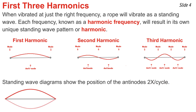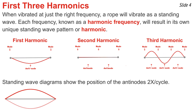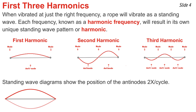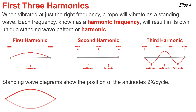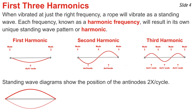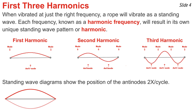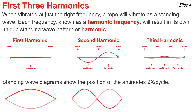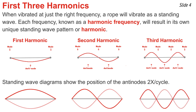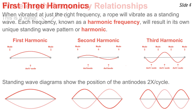We often represent these harmonics by standing wave diagrams that show the position of the rope two times per cycle — one of those positions being when the antinode is at its maximum positive displacement, and the other when the antinode is at its maximum negative displacement. This is the standing wave diagram for the first harmonic, this is the standing wave diagram for the second harmonic, and this is the standing wave diagram for the third harmonic.